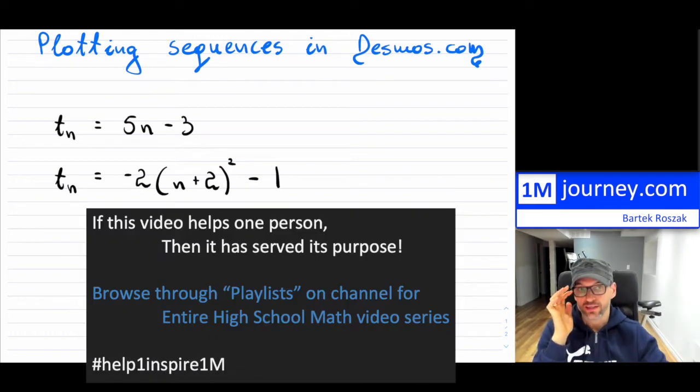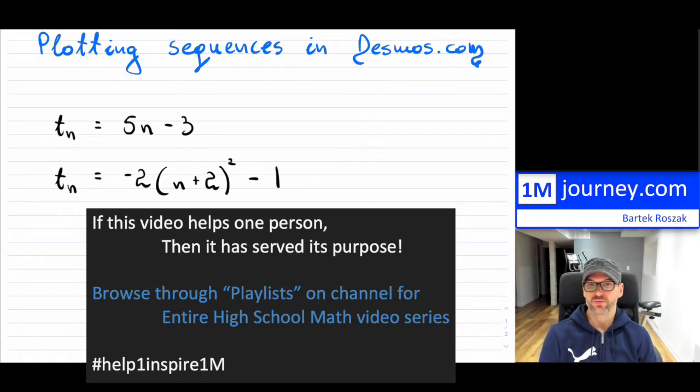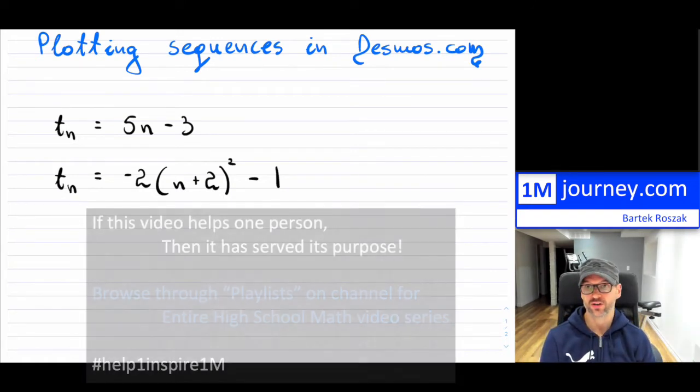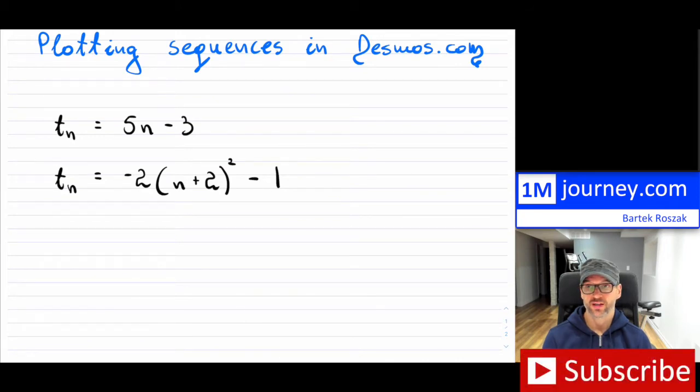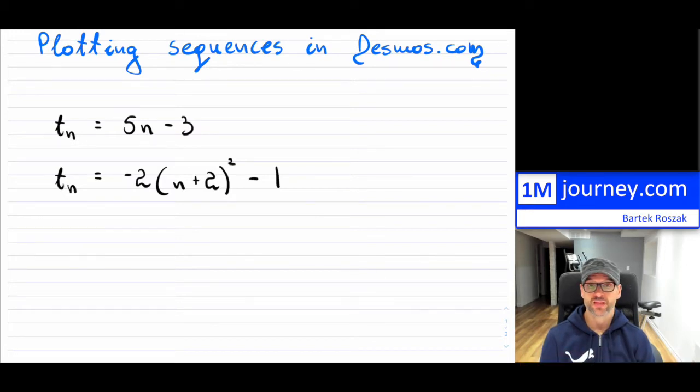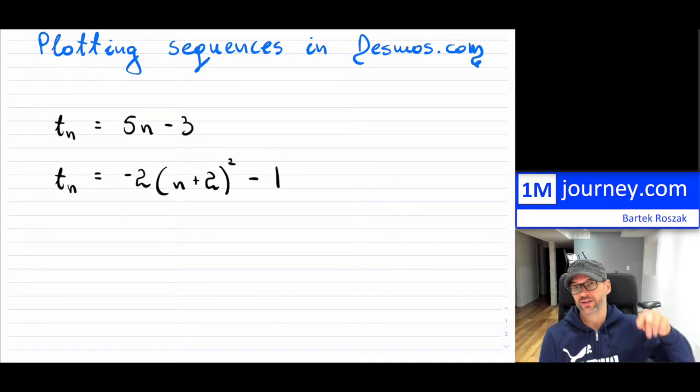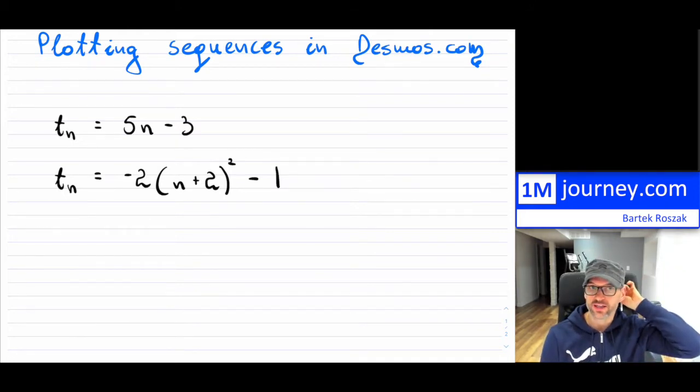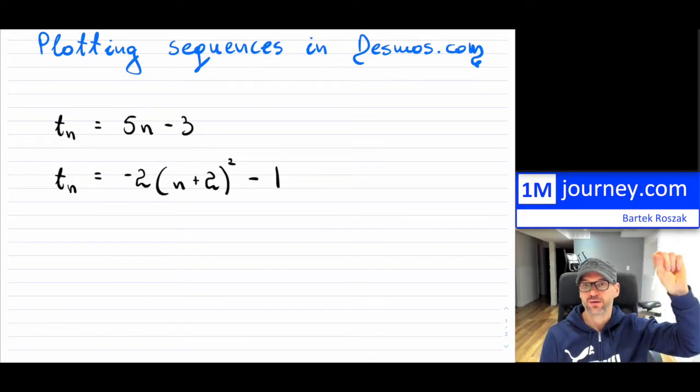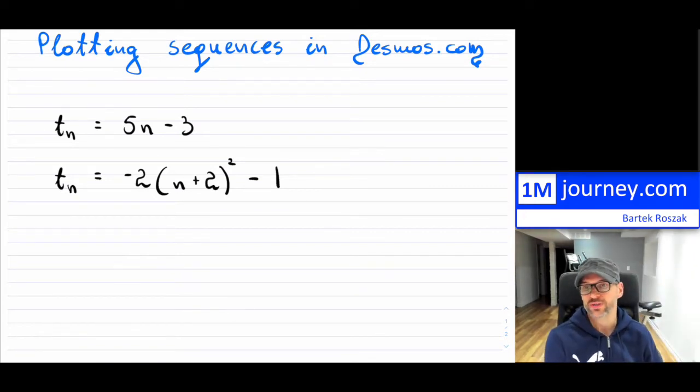Plotting a sequence in Desmos. You're probably used to using Desmos for plotting functions. Functions are continuous in a sense, you have a particular domain that you're given. But whenever you're stuck with plotting discrete functions or sequences, how do you do that in Desmos? Because it's not going to have a nice continuous line associated with it. It's going to be basically points.